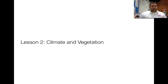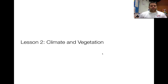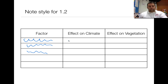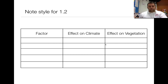Welcome, fifth graders, to your second podcast of this chapter. This lesson, we're going to be looking at climate and vegetation. Anything written in blue will be the factor, and anything written in black will be the effect on the various categories.